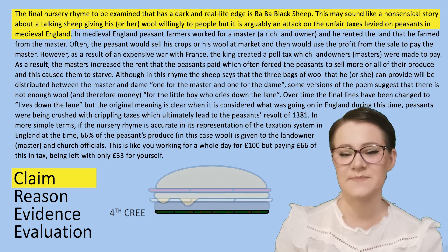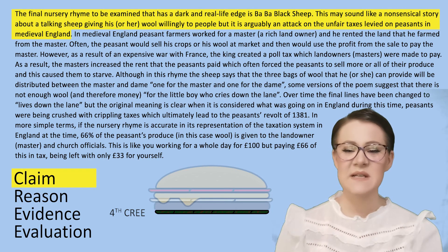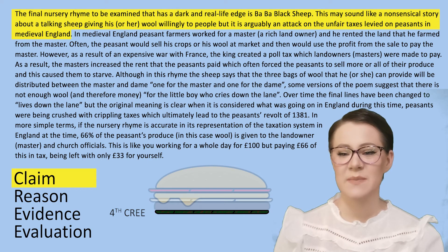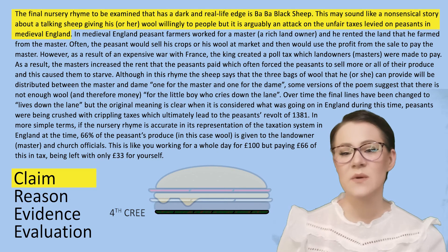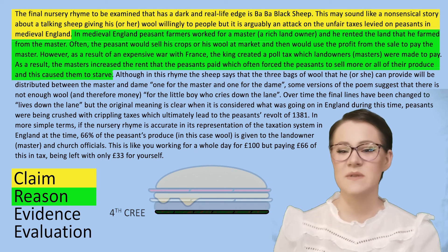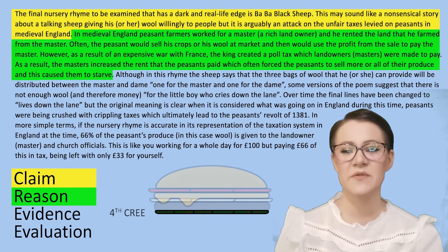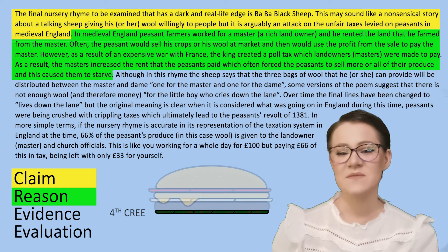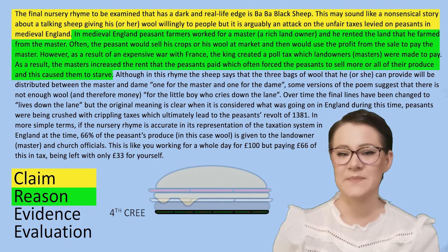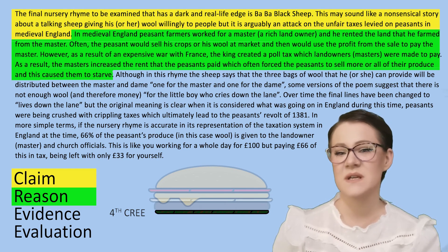In the fourth CREE paragraph I have written: 'The final nursery rhyme to be examined that has a dark and real-life edge is Baa Baa Black Sheep. This may sound like a non-sinister story about a talking sheep giving his or her wool willingly to people, but it is arguably an attack on the unfair taxes levied on peasants in medieval England. In medieval England, peasant farmers worked for a master, a rich landowner, and rented the land that they farmed from the master. Often the peasants would sell their crops and their wool at market, and then would use the profit from the sale to pay the master. However, as a result of an expensive war with France, the King created a poll tax which landowners — masters — were made to pay. As a result, the masters increased the rent that the peasants paid, which often forced the peasants to sell more or all of their produce, and this caused them to starve.'